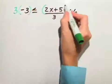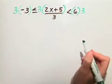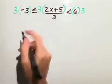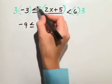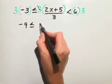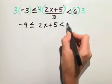So we'll have 3, 3, 3. And we end up with negative 9 is less than or equal to, notice the 3 and 3 divide out and give us 1, so we just have 2x plus 5 in the middle part, is less than 18.